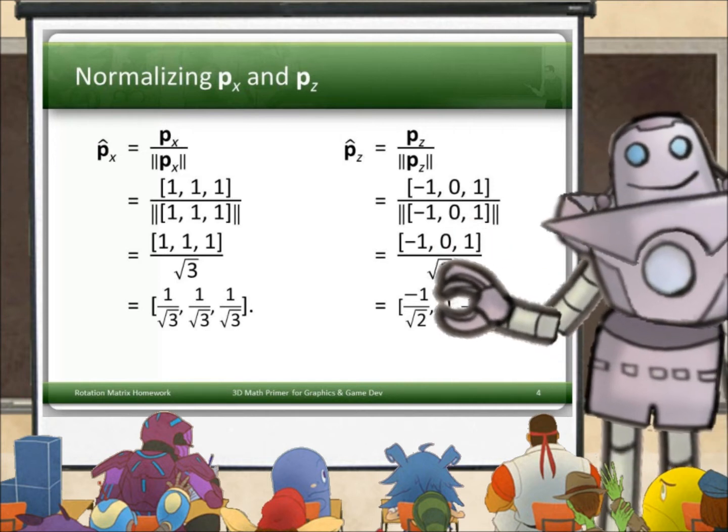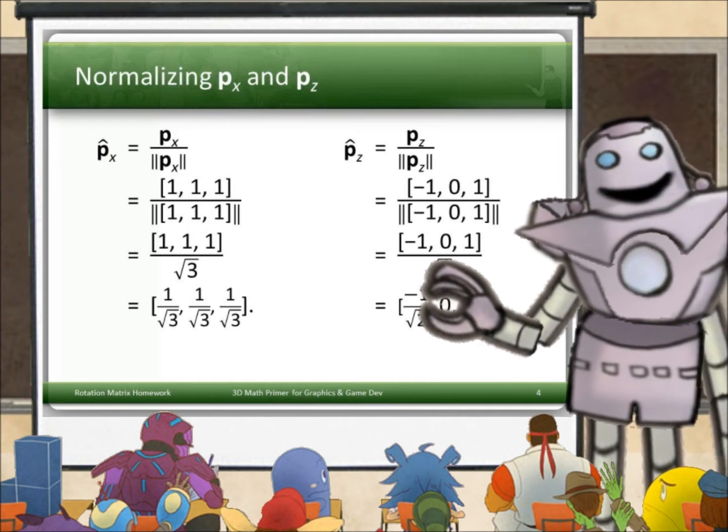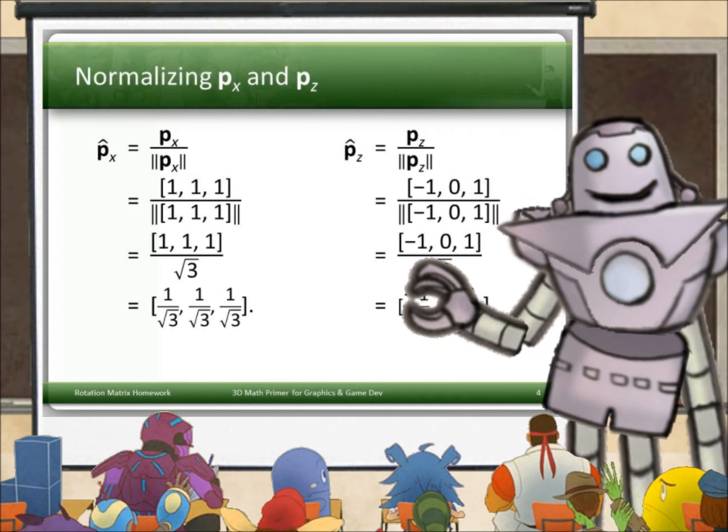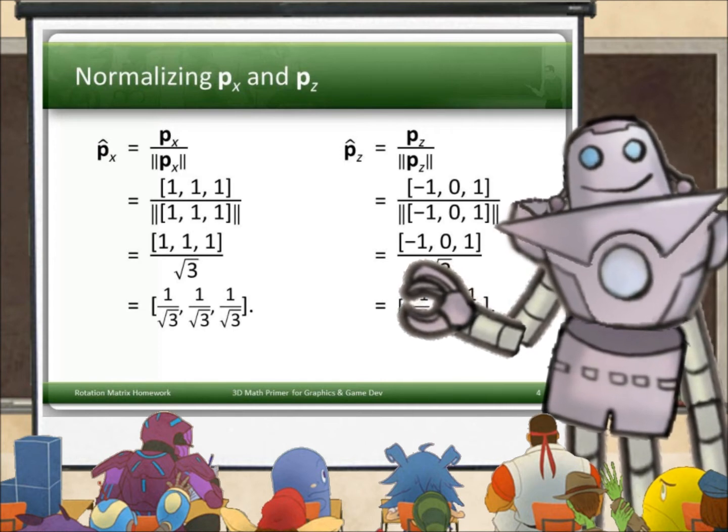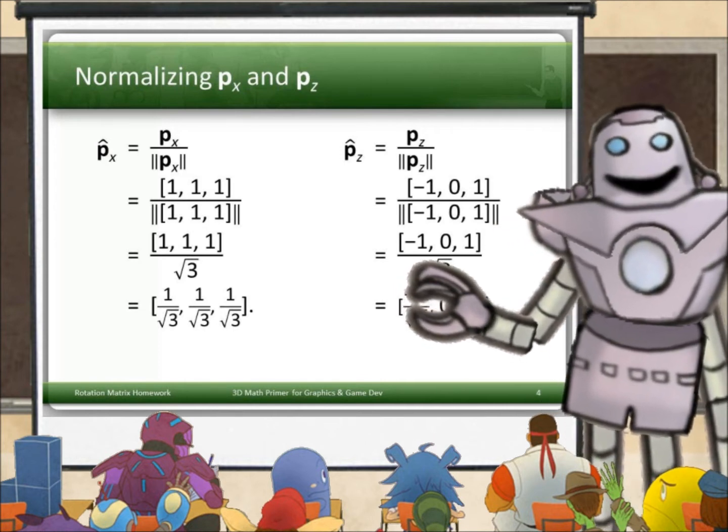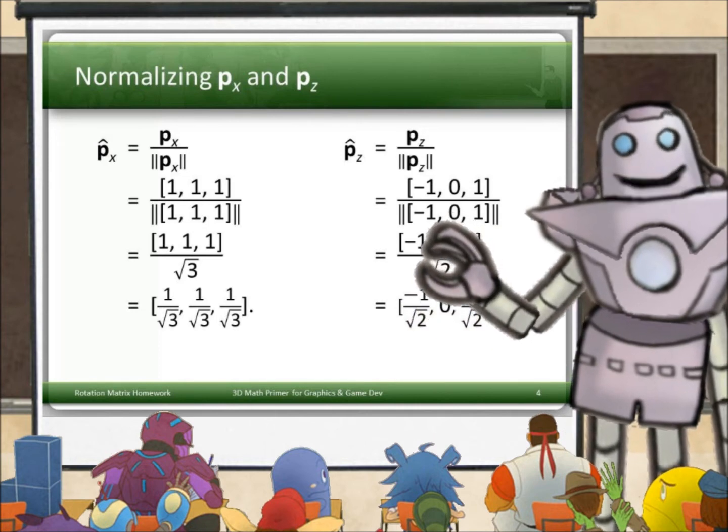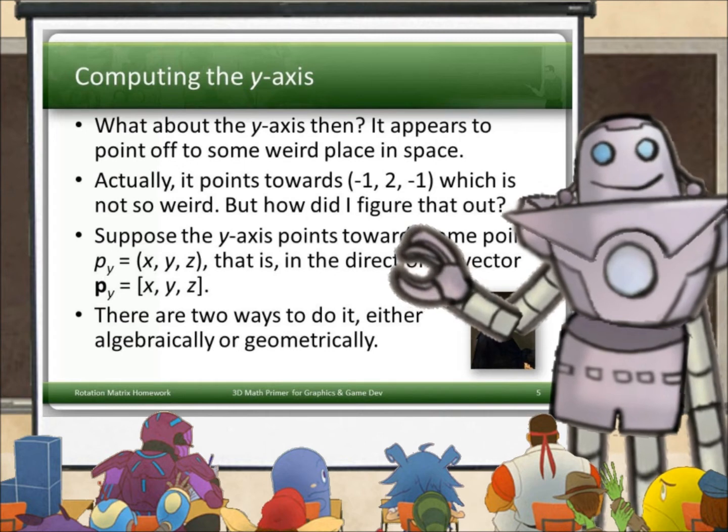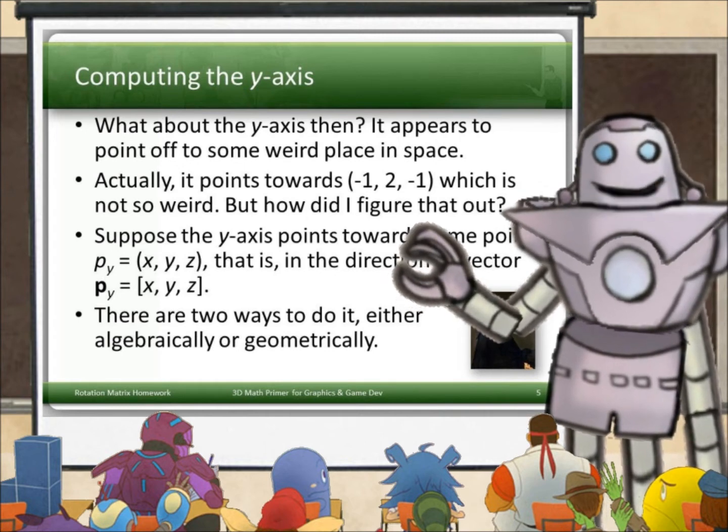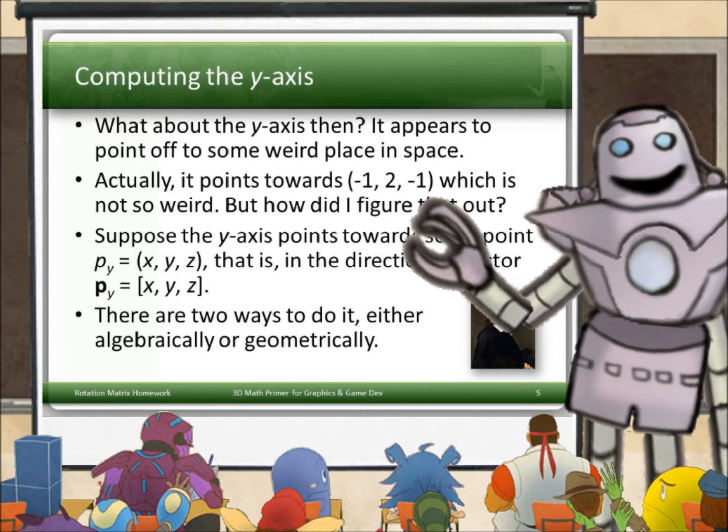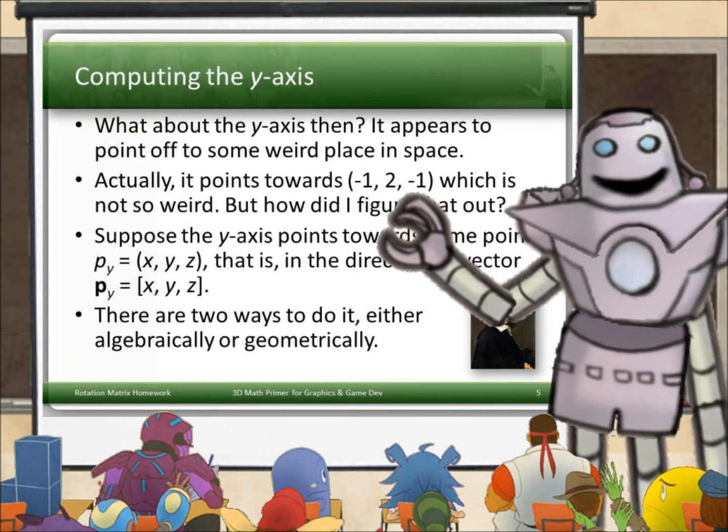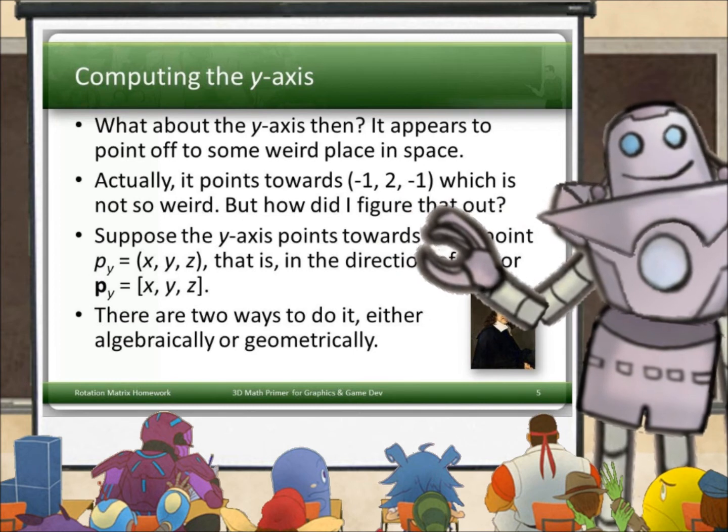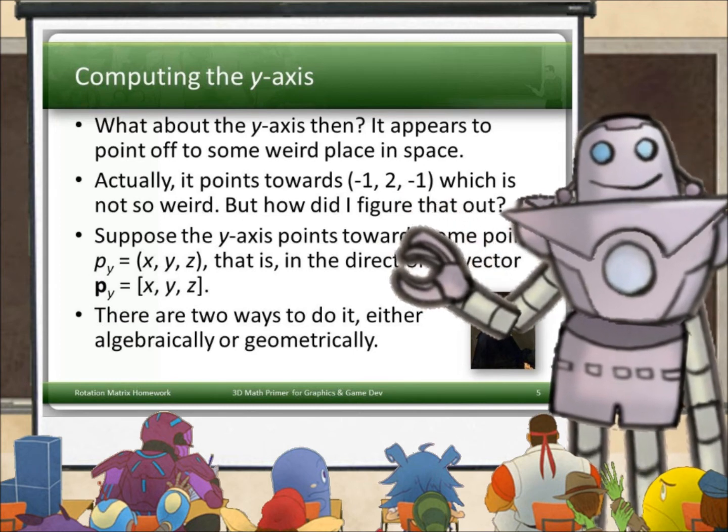Remember that once I've got these vectors, I treat them as the row of a matrix. Just jam them into the rows of a matrix. And I've got the rotation matrix that I'm looking for. Ah, cool. I'm still missing p_y hat. So what about the y-axis then? It appeared from before to point off to a weird point in space. Actually, it points towards (-1, 2, -1), which is not so weird. But how did I figure that out?